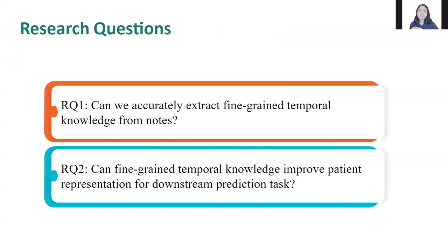Therefore, we pose the following research questions: Can we extract precise temporal knowledge from notes? And can this knowledge enhance patient representation for future risk prediction? Understanding the latent temporal patterns is crucial for modeling chronic conditions with gradual progression, like diabetes, heart failure, and cancer. In this work, our focus is on early detection of type 2 diabetes.